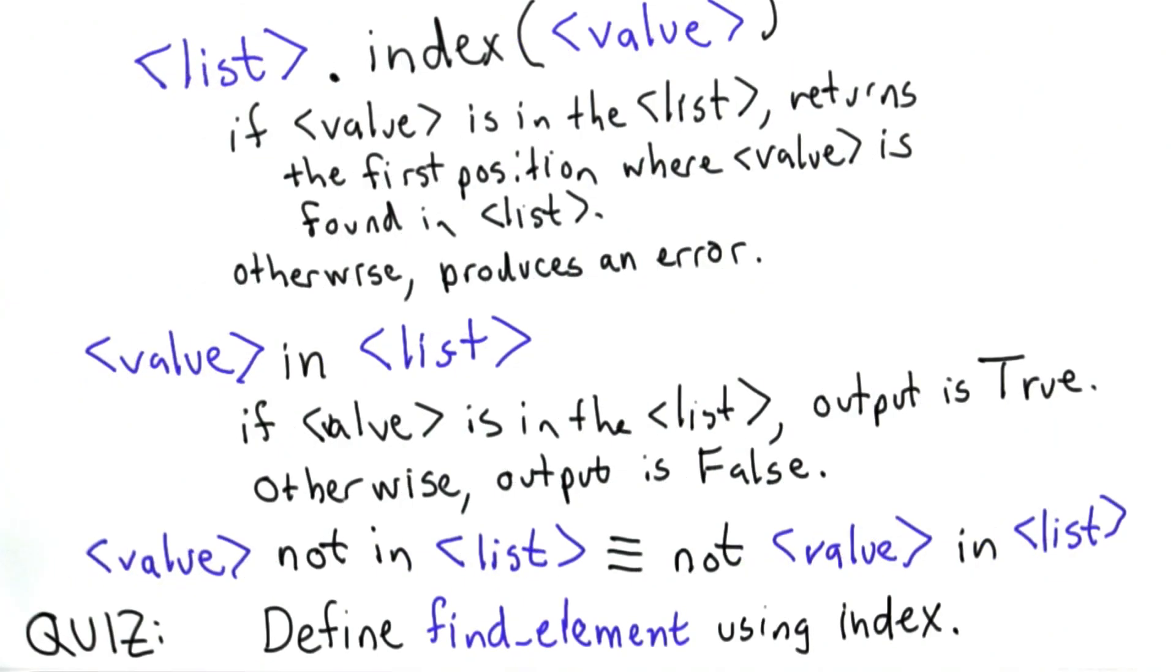So now to check that you understand index and the in and not in operations, I want you to try to define the find element procedure again. It should have the same exact behavior as the ones we've defined before, that it should give us the position of the element we're searching for if it exists, and it should give us negative 1 if it doesn't exist. But this time, instead of using a while loop or a for loop to define it, see if you can define it using index.